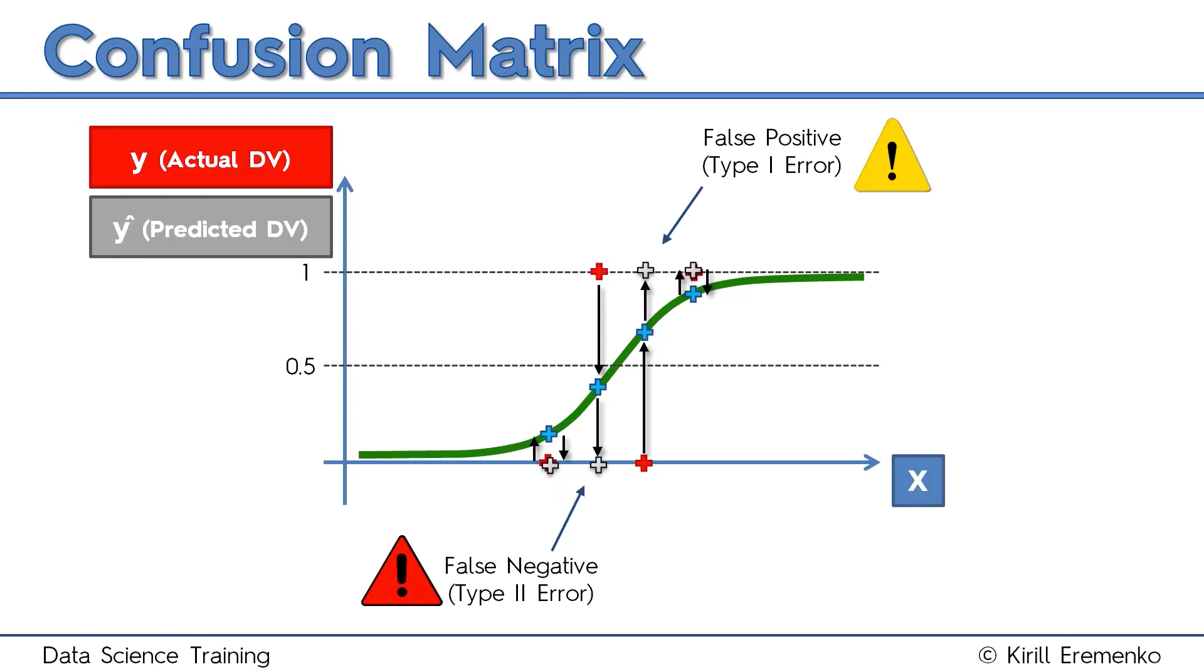Last time we left off where we discussed false positives and false negatives, type 1 errors and type 2 errors. The false positive is when you predict that something will happen, but it actually doesn't happen, and that's a type 1 error.